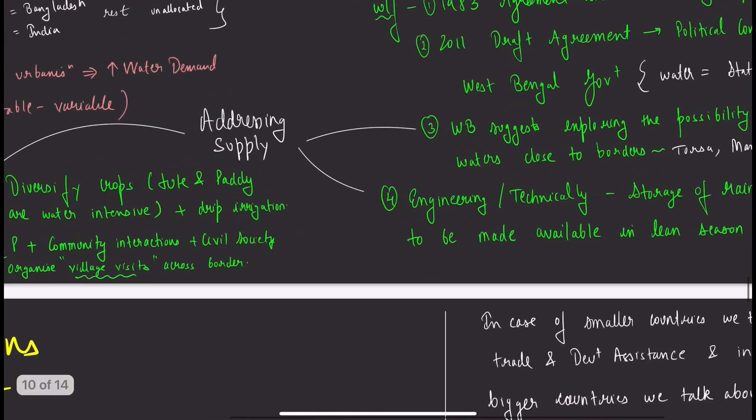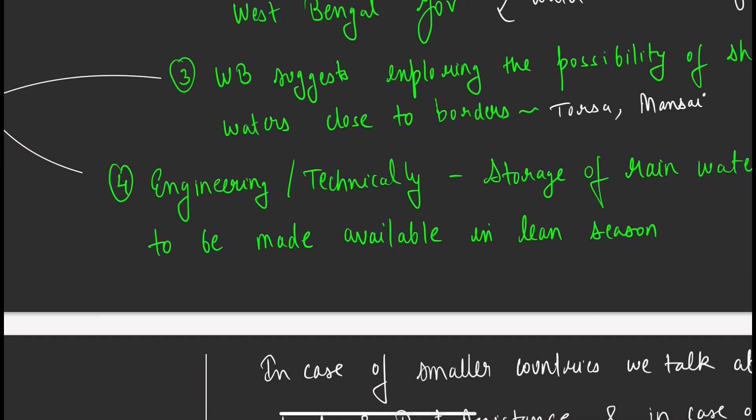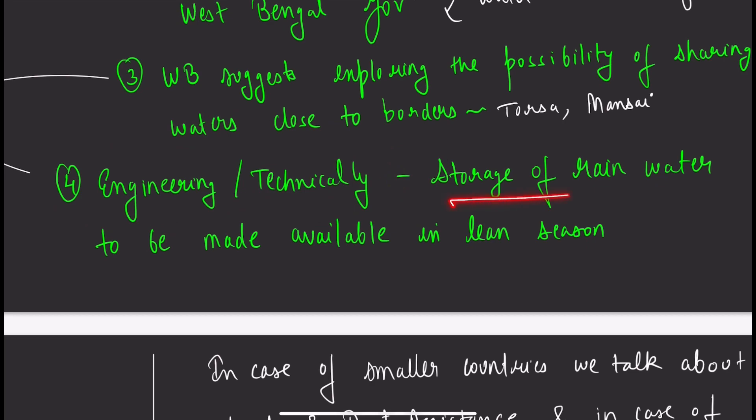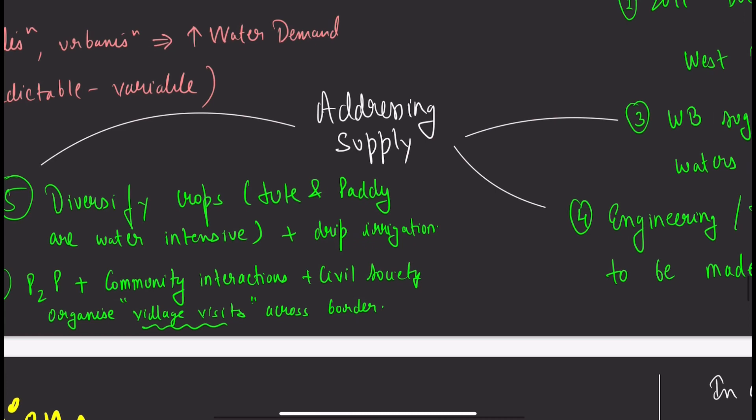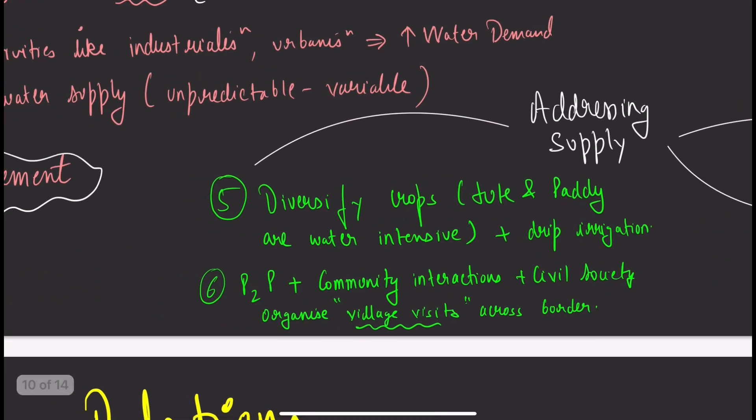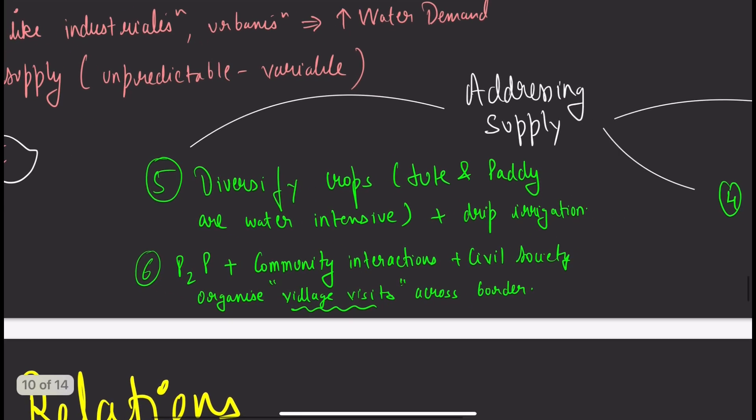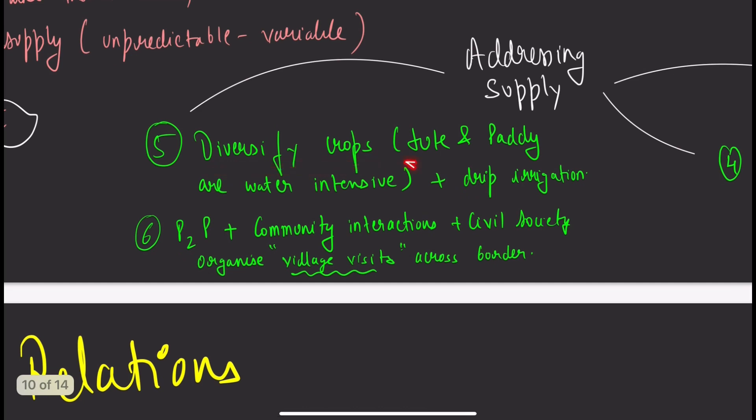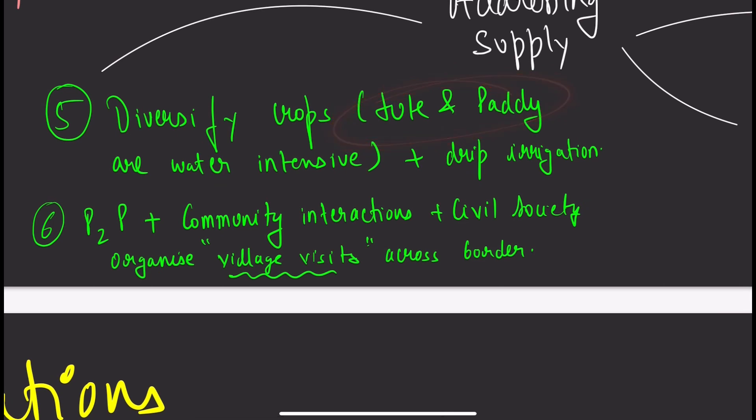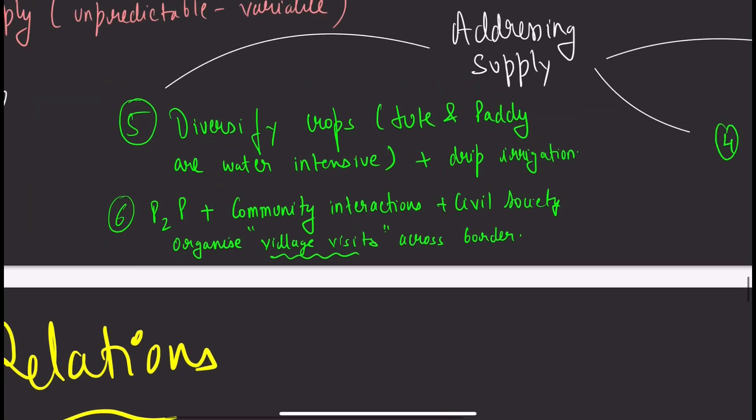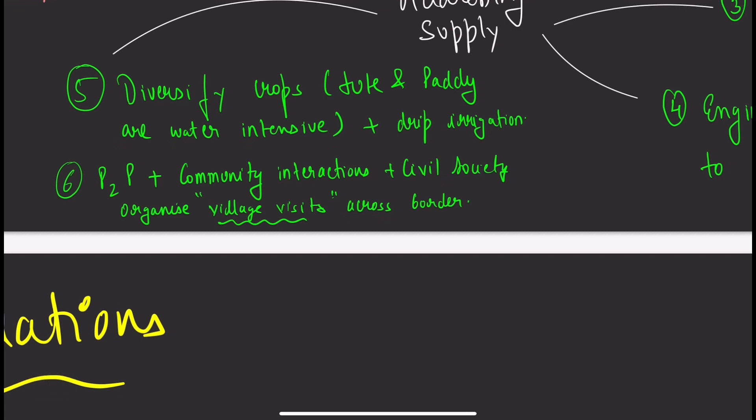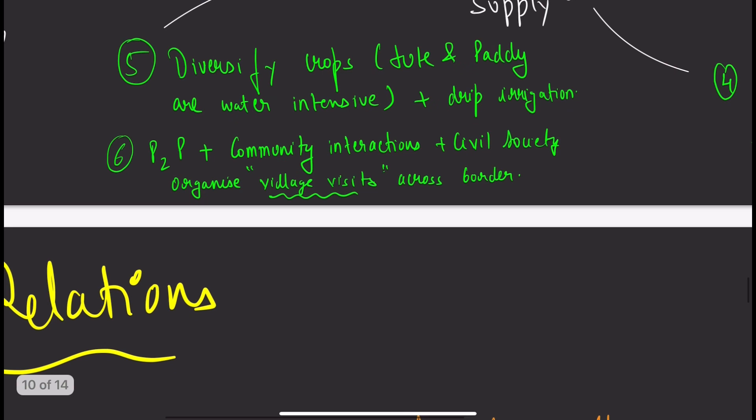Addressing supply through engineering solutions like storage of rainwater to be made available in lean seasons, aquifers, and rainwater harvesting. These methods should be followed everywhere in every state and city as good ecological practice. Diversify crops—jute and paddy are very water-intensive crops.